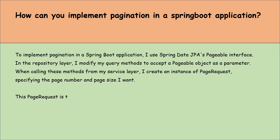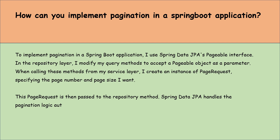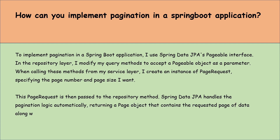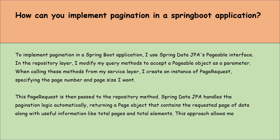This PageRequest is then passed to the repository method. Spring Data JPA handles pagination logic automatically, returning a Page object that contains the requested page of data along with useful information like total pages and total elements. This approach allows me to efficiently manage large datasets by retrieving only a subset of data at a time.